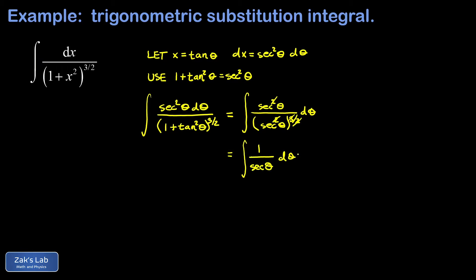This results in the integral of 1 over secant theta d theta. Recalling that the secant function is 1 over cosine, 1 over secant is simply cosine. The integral of cosine is the sine function, and we add a plus C for this indefinite integral.